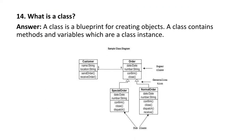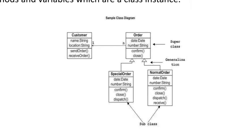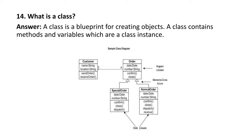Next question: what is a class? A class is a blueprint for creating objects. A class contains methods and variables which are class instances. For example, the class 'customer' has characteristics like name and location, and the class 'order' has characteristics like date and number. This is nothing but the class.